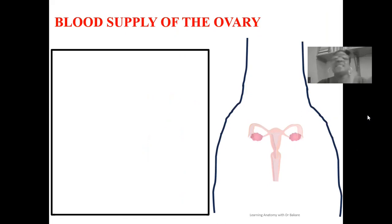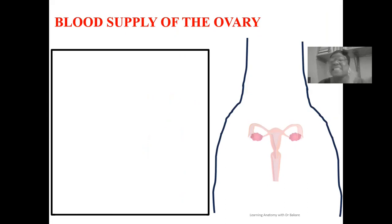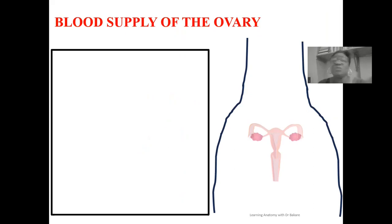The ovary is supplied by the ovarian artery. This artery, surprisingly, is a branch from the abdominal aorta. The abdominal aorta is located within the abdominal space, while the ovary is located within the pelvic cavity.